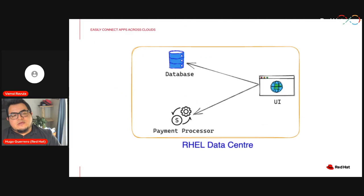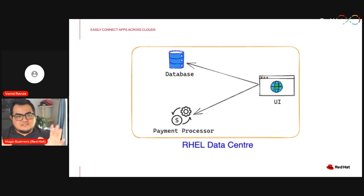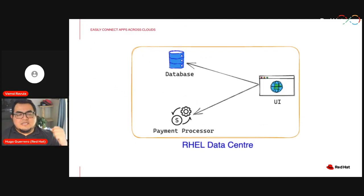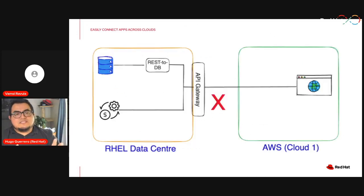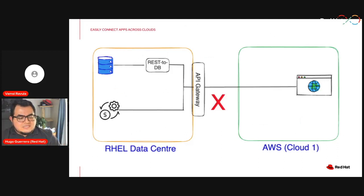Let's look at the hybrid cloud use case. I'm part of an IT team managing an old data center where a simple application runs: a database — maybe DB2, Oracle, or a RAC system — that we won't be moving to the cloud due to data gravity. We also have a UI for managing patient information and a payment processor for patient billing. We want to move the UI, which doesn't require PII compliance, to a public cloud like AWS.